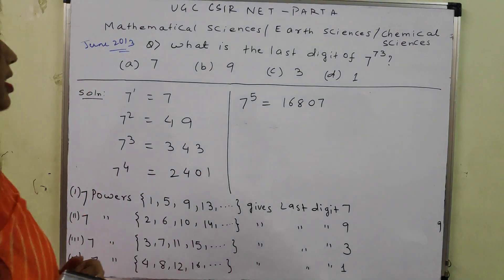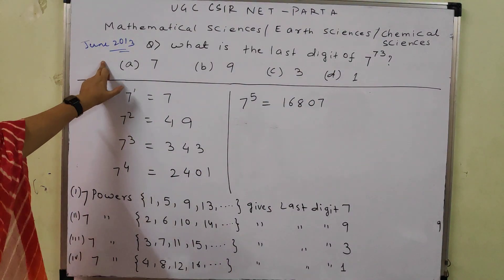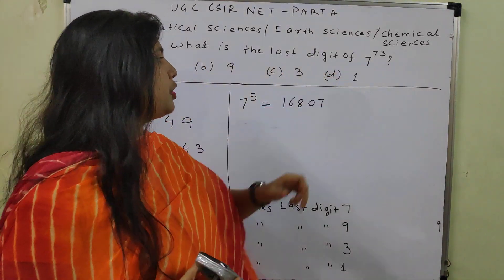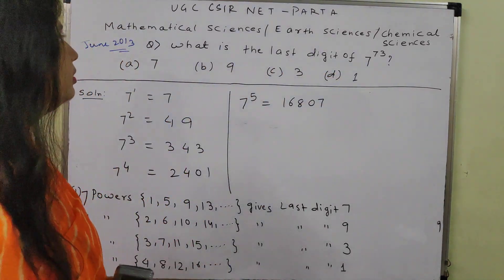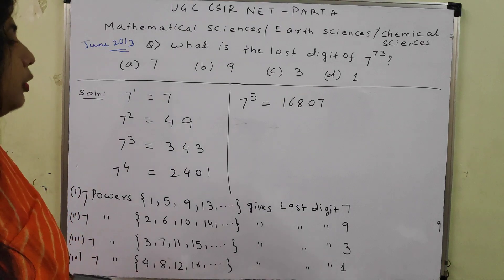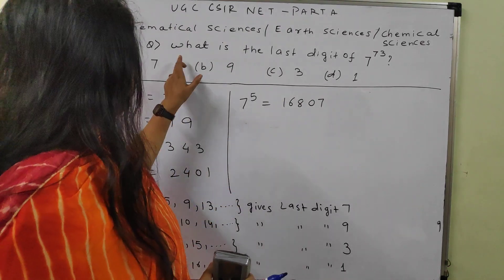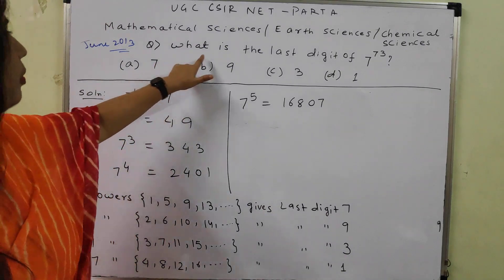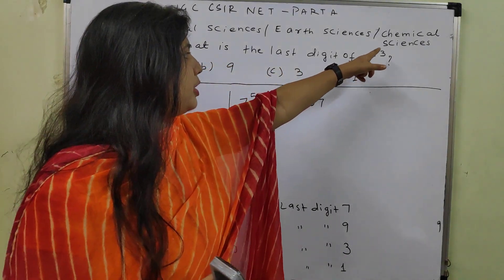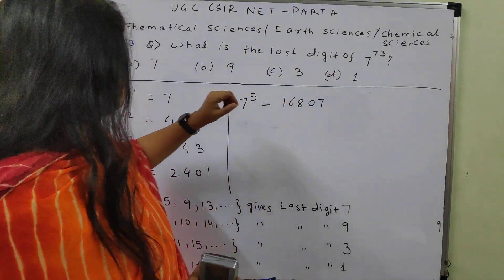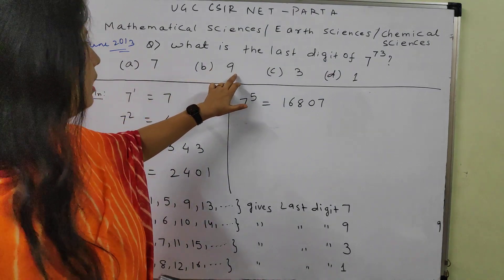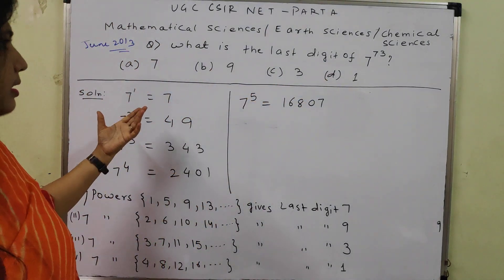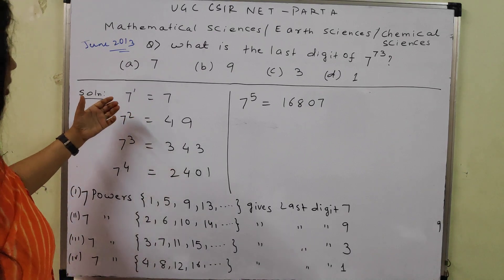The next question is again from June 2013: What is the last digit of 7 raised to the power 73? This looks simple but takes a little time to understand. The four options given are 7, 9, 3, and 1.